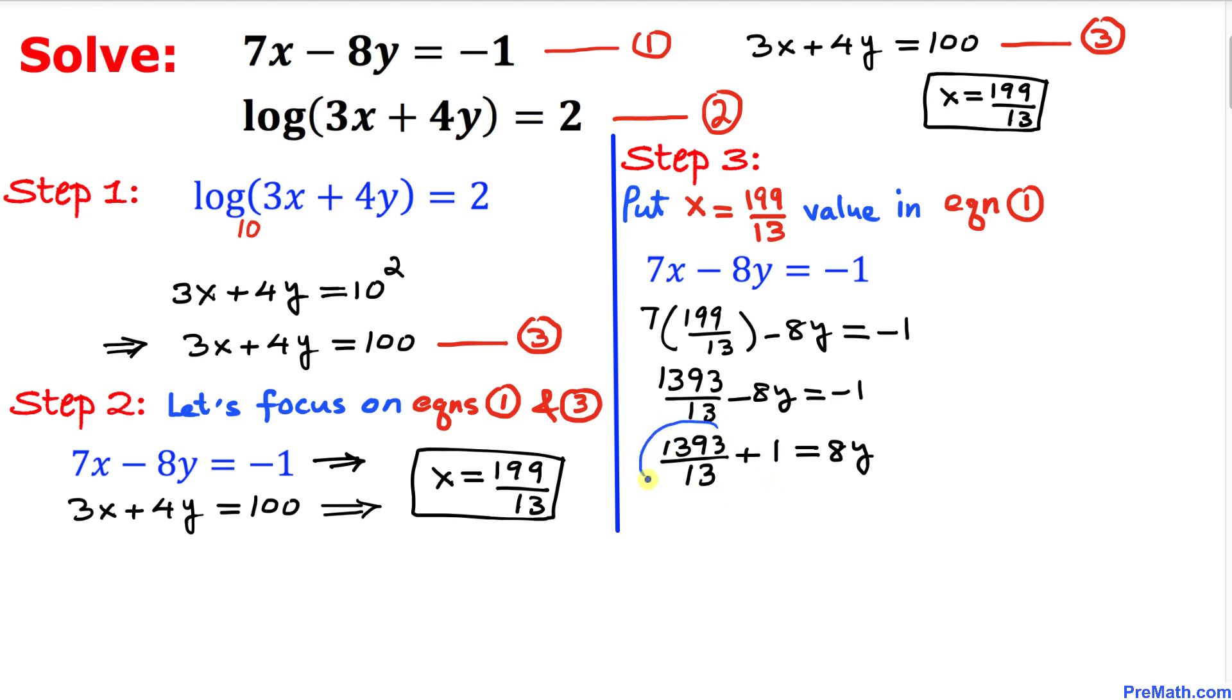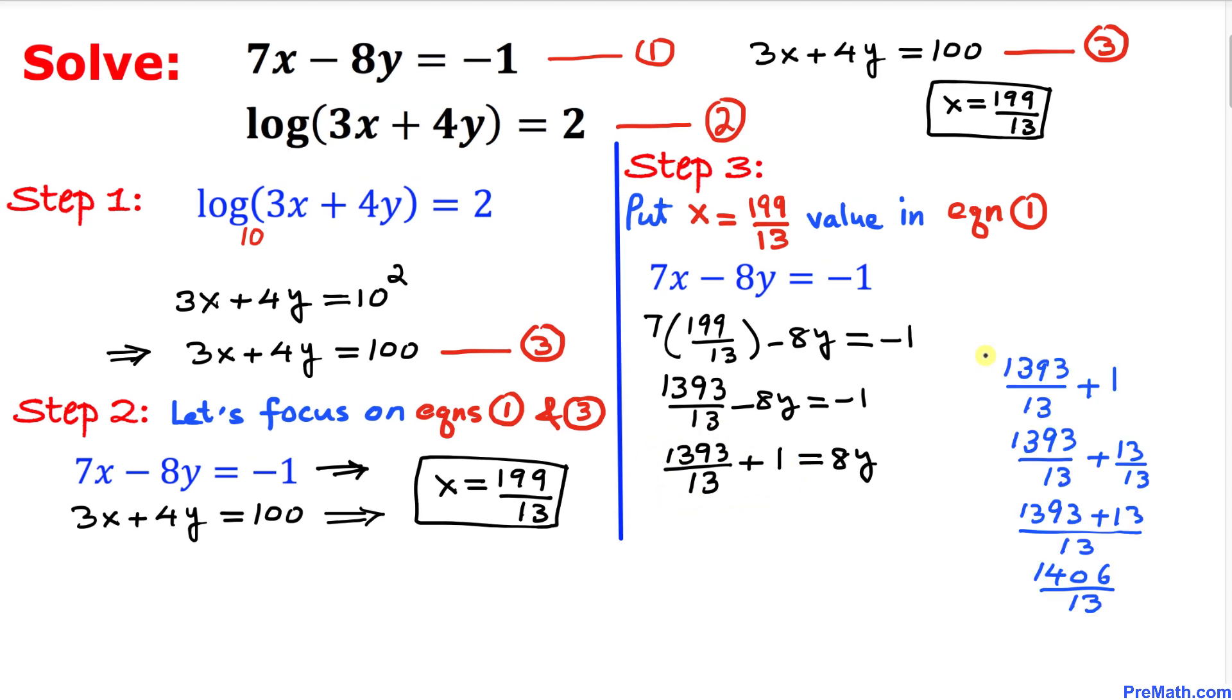Let's focus on this left-hand side part. I've copied it down. After simplifying everything, we got 1406 divided by 13. So we got 8y equals 1406 divided by 13.